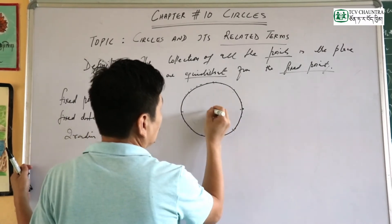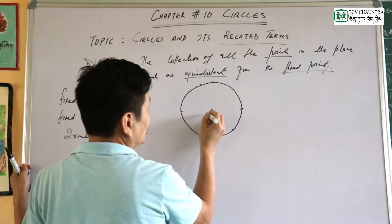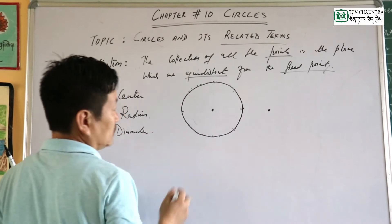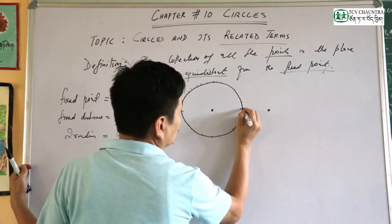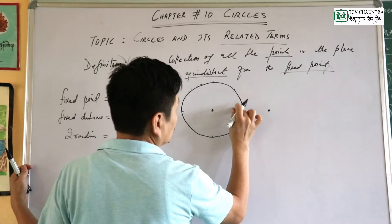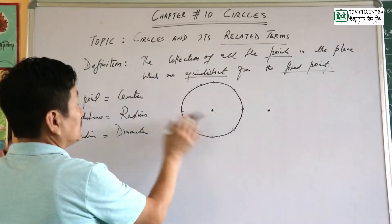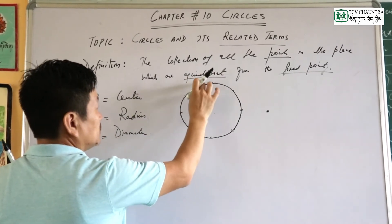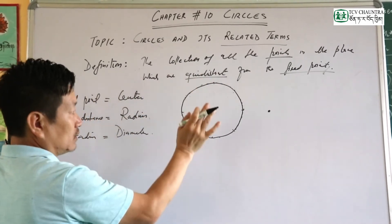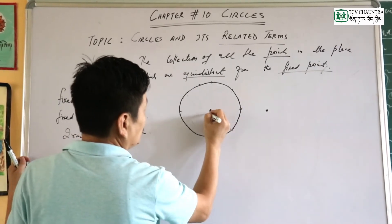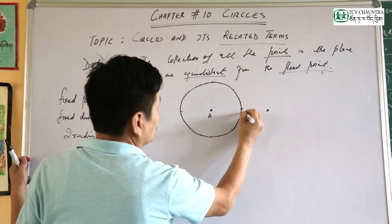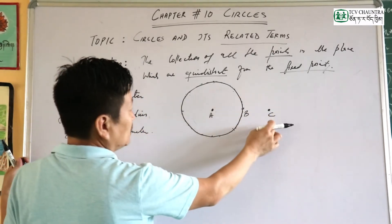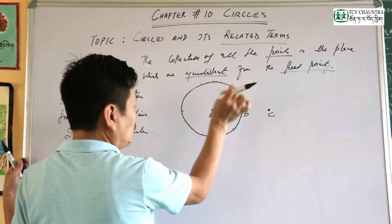A point inside the circle is an interior point. Another point outside the circle is an exterior point. A point on the circle lies on the boundary of the circle. Point A is inside the circle, point C is outside the circle, and point B is on the circle.